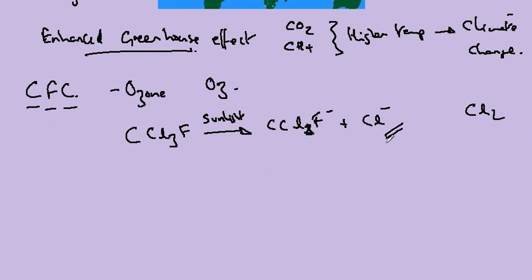And this catalyses the breakdown of O3 to O2. Now the significance of this is that O3 is much better at absorbing UV light than O2 is. And so we are effectively removing the protection of the ozone layer. And this is associated with chlorofluorocarbons.